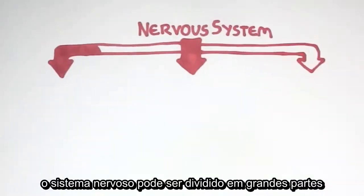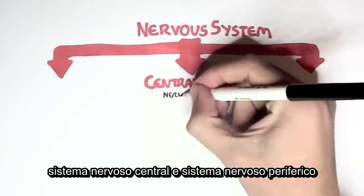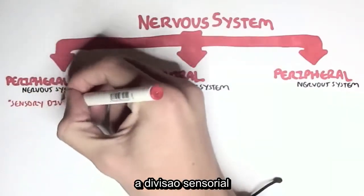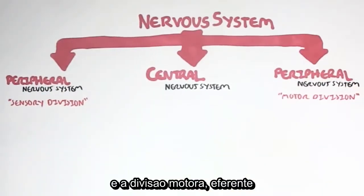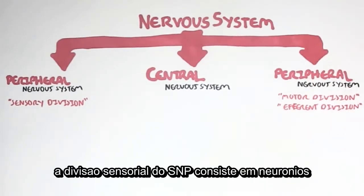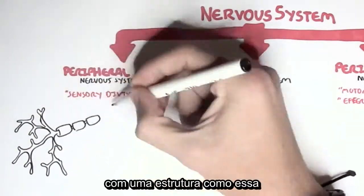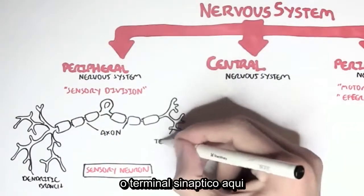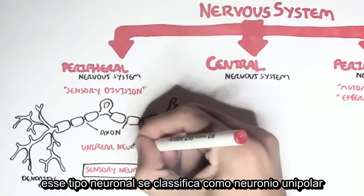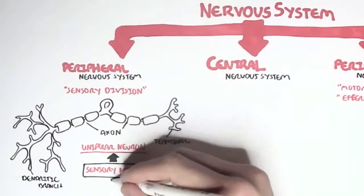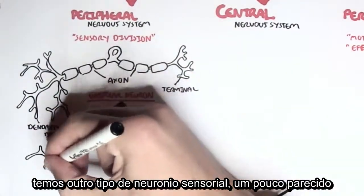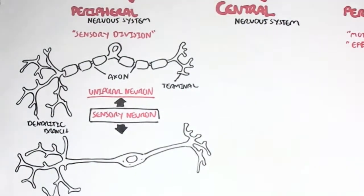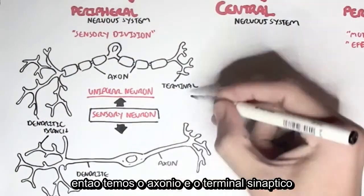The nervous system can be divided into two major parts: the central nervous system and the peripheral nervous system. The peripheral nervous system consists of a sensory division and a motor or efferent division. The sensory division contains sensory neurons that have dendritic branches, the axon on either side of the soma, and then the synaptic terminal — this is categorized as a unipolar neuron. We also have another type of sensory neuron: the bipolar neuron, where the dendrite extends to the soma, then we have the axon and finally the synaptic terminal.